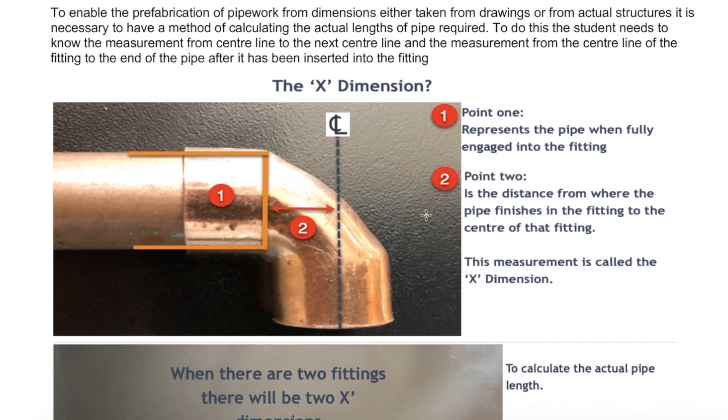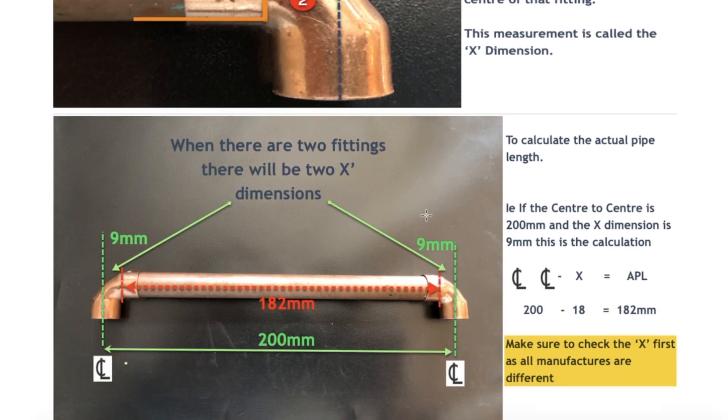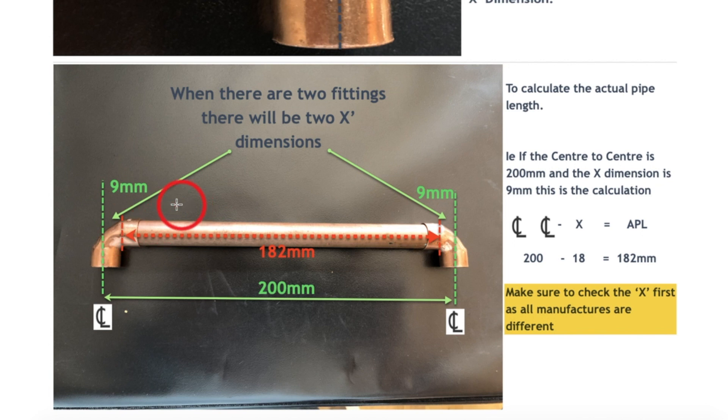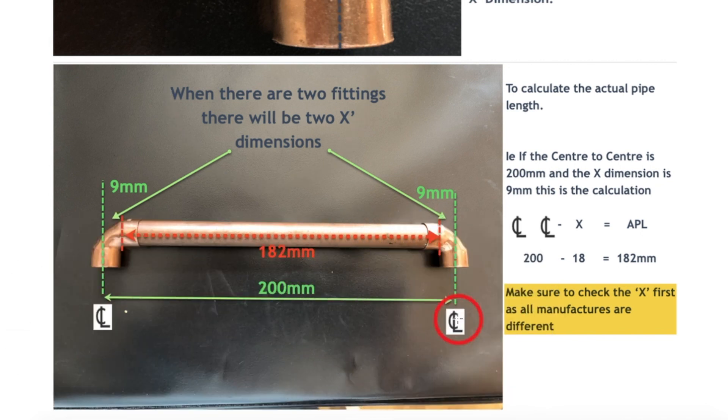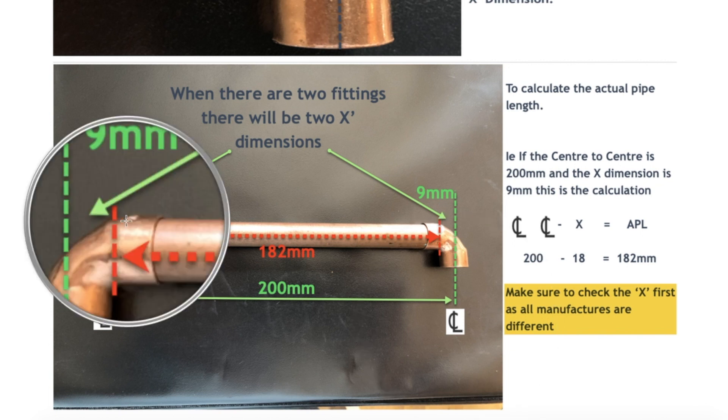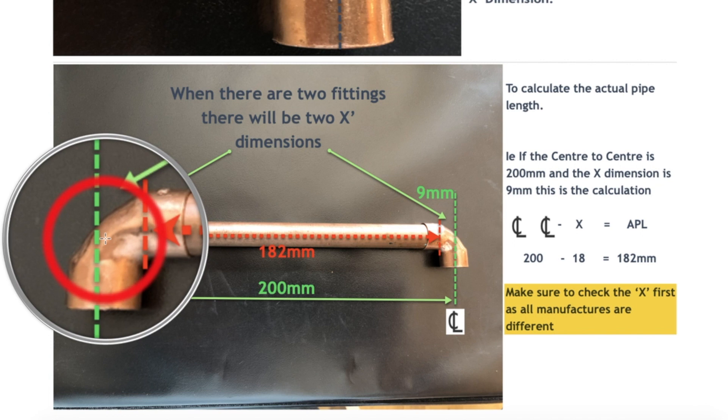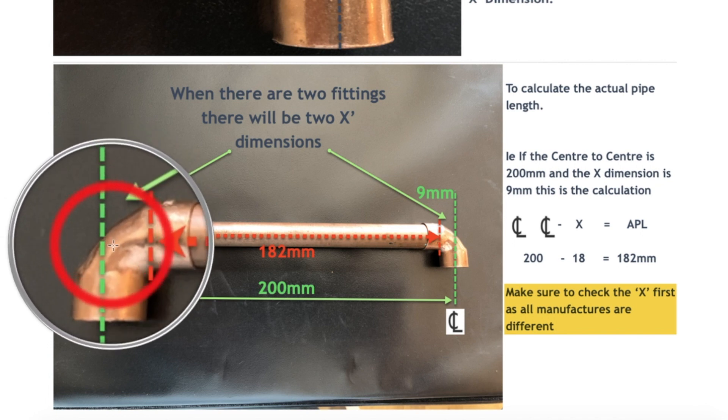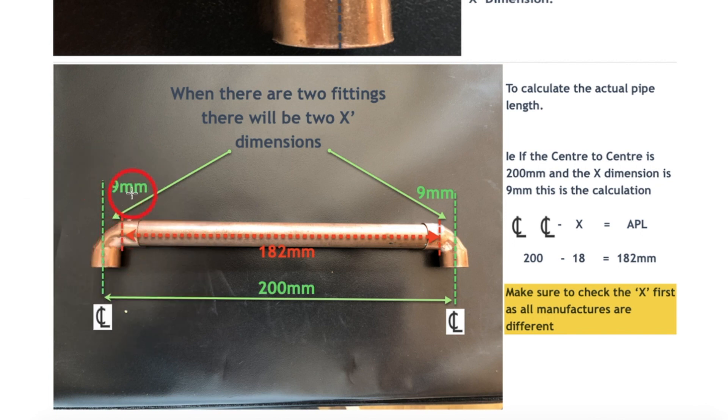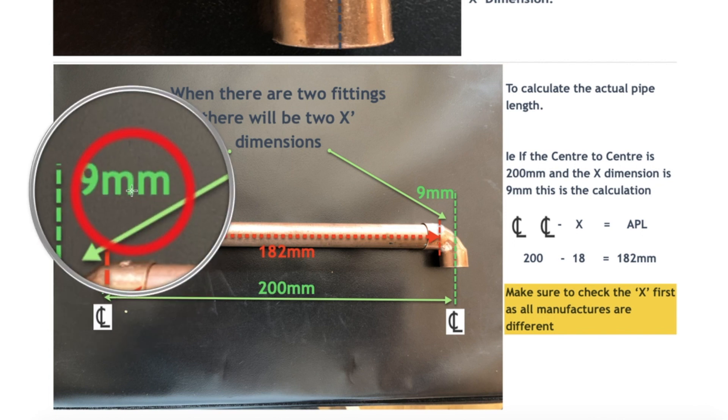I've done short videos about this particular task. As you can see, we've got two elbows, two 90-degree bends placed at either end of the pipe, and the measurement between center line to center line is 200 millimeters. There is a distance between where the pipe finishes to where the center line of the fitting itself is, and this is known as the X dimension. In this case, it's nine millimeters.